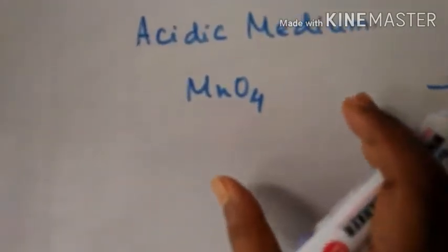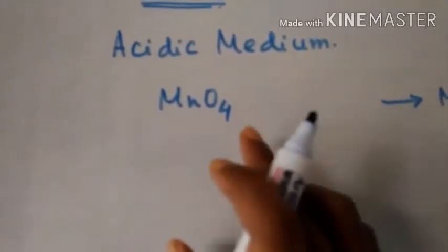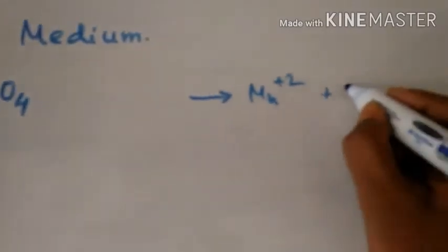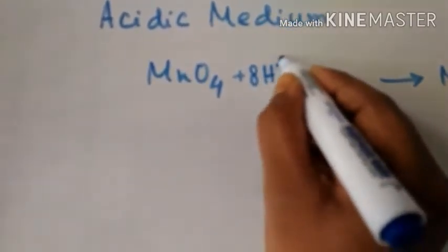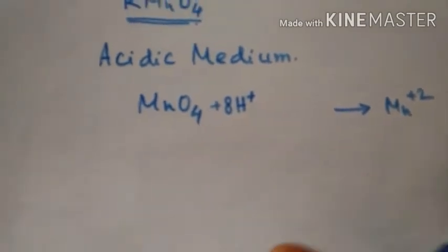Here we have 4 oxygens, so 4 water molecules should be given, and 8 hydrogens, so 8 H⁺ will come. This completes the atomic balance. For ionic balance, we need 2+ and 5 electrons.